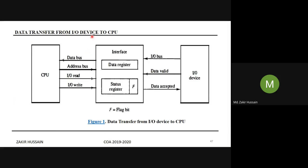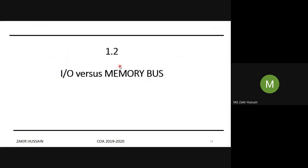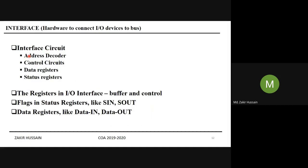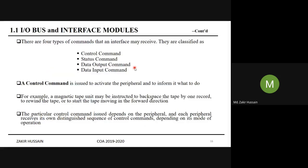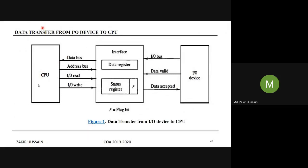Data transfer from an I/O device to the CPU involves the CPU, the I/O device, and an interface between them. Each I/O device has its own interface unit. The interface unit contains circuitry including a data register, a status register, and a flag — a single-bit flip-flop register. There are also signals coming from the I/O device to the interface indicating that data is valid.